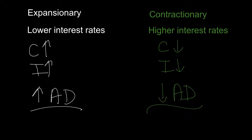To walk through one full example: suppose the Fed wants to use open market operations to increase aggregate demand. To do that they need to lower interest rates, which requires growing reserves so the federal funds rate drops. To grow reserves through open market operations, the Fed buys bonds — taking bonds from the public and putting money into their hands, which flows into the banking system. Deposits grow, reserves grow, interest rates fall, consumption grows, investment grows, and you get your increase in aggregate demand.